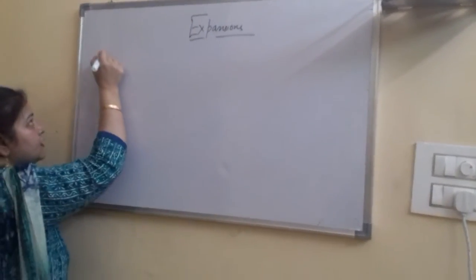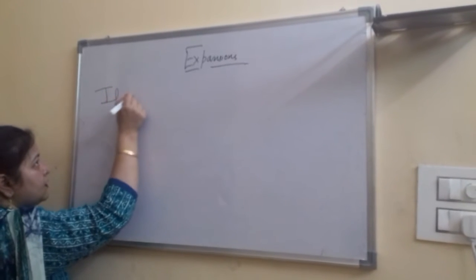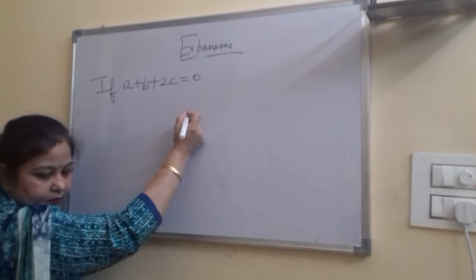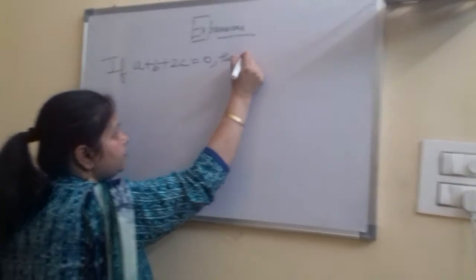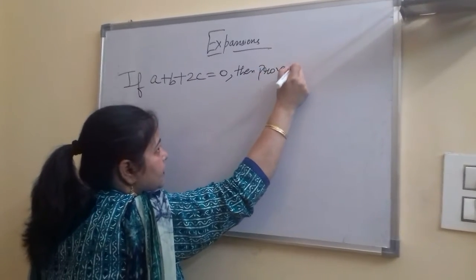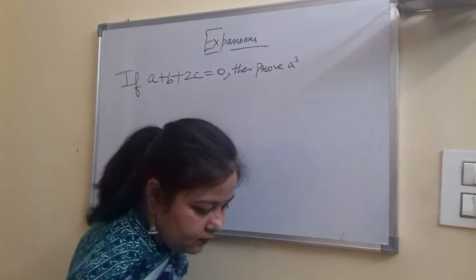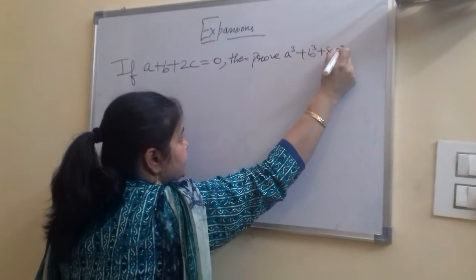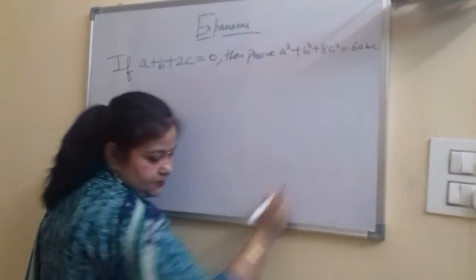The last question: if a plus b plus 2c equals 0, then prove that a cube plus b cube plus 8c cube equals 6abc. Concentrate on what is given. Taking 2c to the right-hand side, we get a plus b equal to minus 2c.